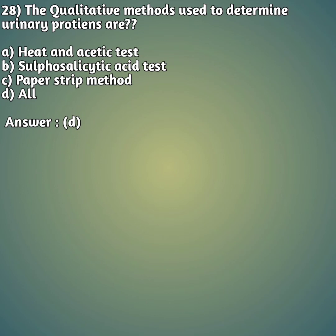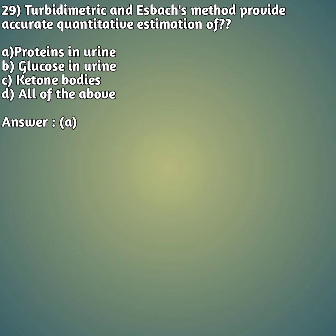Question 28: The qualitative methods used to determine urinary proteins are — option A: heat and acetic acid test, option B: sulfosalicylic acid test, option C: paper strip method, option D: all. The right answer is option D, all — these are all qualitative methods used to determine urinary proteins.